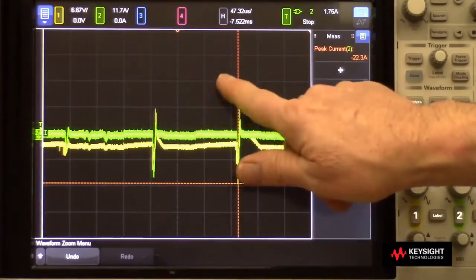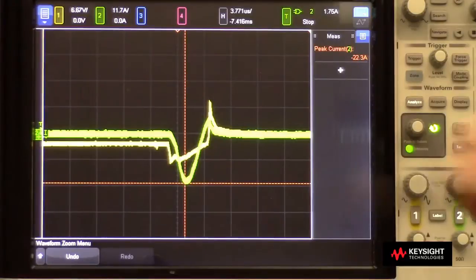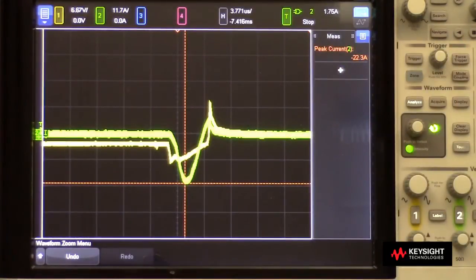Wait a minute, not that one, it's this one right here. And there, you can see the characteristics of that initial spike that was minus 22.3 amps.